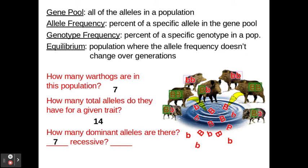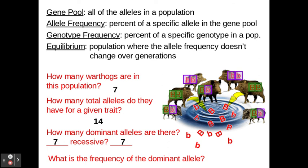How many recessive alleles are there? They're highlighted in purple — there are also seven. Now we can calculate the frequency of the dominant allele. There are seven dominant alleles out of 14 total alleles. We divide those numbers and get 0.5. A frequency of 0.5 means 50%, so 50% of the alleles are dominant in the gene pool for this trait in this population of warthogs.